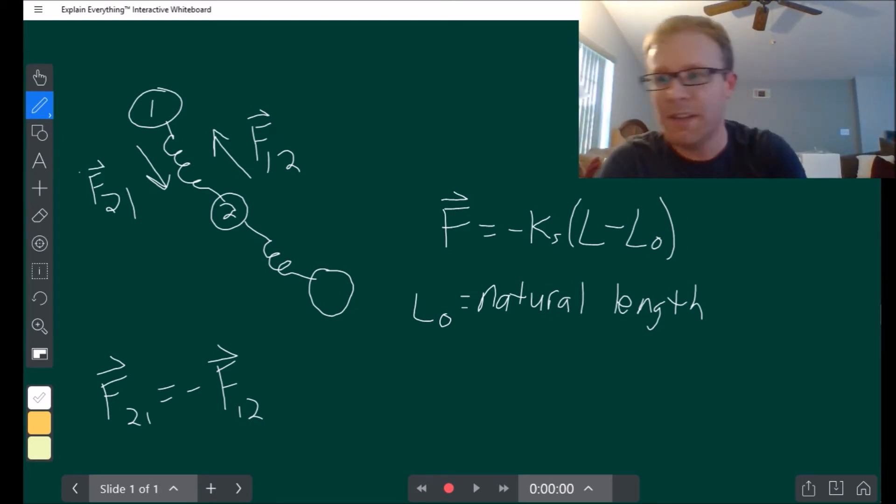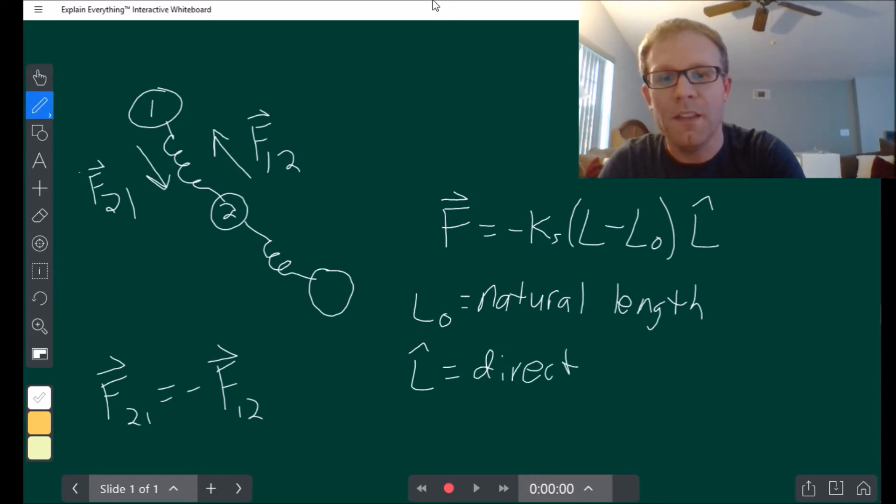And of course, this force over here is a vector, meaning it needs a magnitude and a direction. What we have over here so far is just a magnitude. We have to give it a direction. We use a little tool for that called a unit vector. This L hat, the hat just indicates that it's a unit vector, meaning it's pure direction. It has a magnitude of one. And so this is just the direction between the atoms.